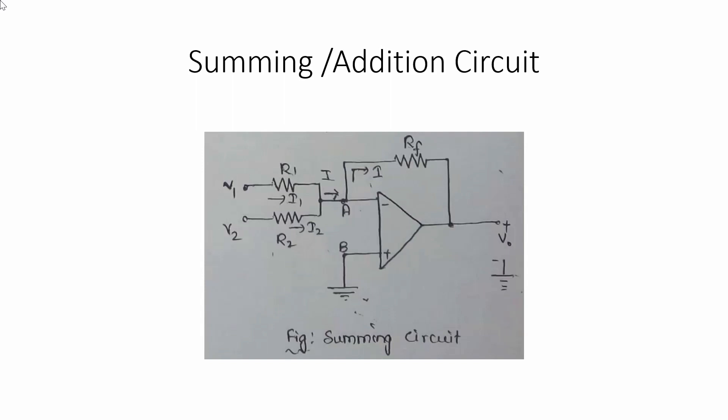The summing or additional circuit is used to add the input voltages with amplification. The output voltage is the addition of input voltages. If we use two inputs V1 and V2, the expected output Vo is minus of (V1 plus V2). It is negative because V1 and V2 are applied to the inverting terminal. We will discuss the derivations and how the output voltage is obtained.